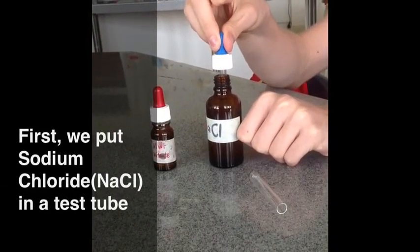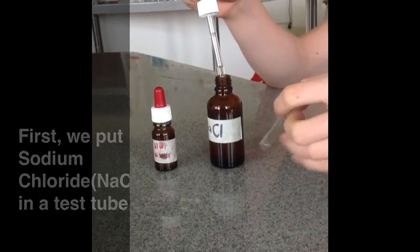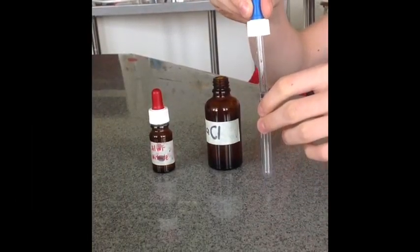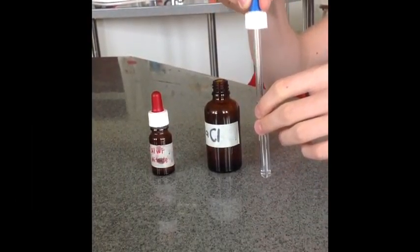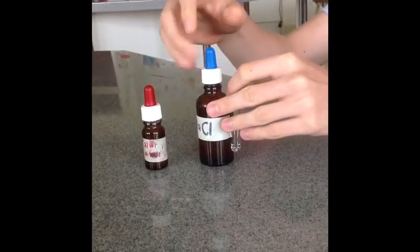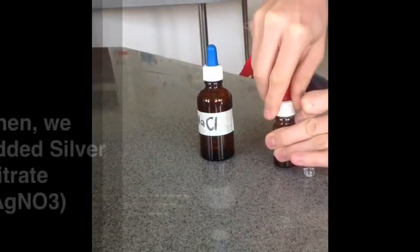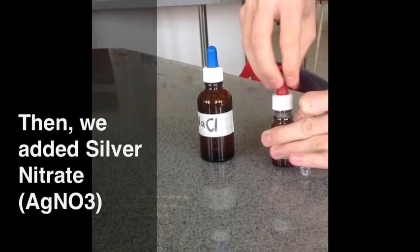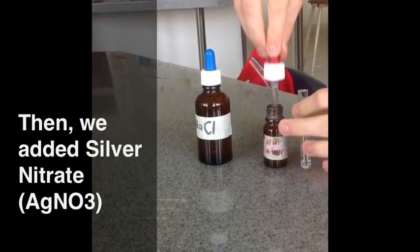First, we put sodium chloride (NaCl) in a test tube. Then we added silver nitrate, AgNO3.